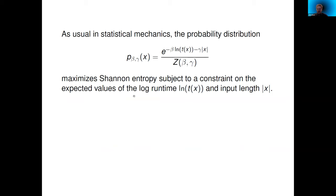We can pretend we're doing statistical mechanics: we make a Gibbs-type ensemble with the usual Boltzmann-like factor divided by the partition function. This gives a probability distribution on the domain of our Turing machine — a probability distribution on all programs that halt — where the probability of any particular program is exponentially damped according to the logarithm of its runtime and the length of the program. As usual, this probability distribution maximizes Shannon entropy subject to constraints on the expected values of log runtime and input length.